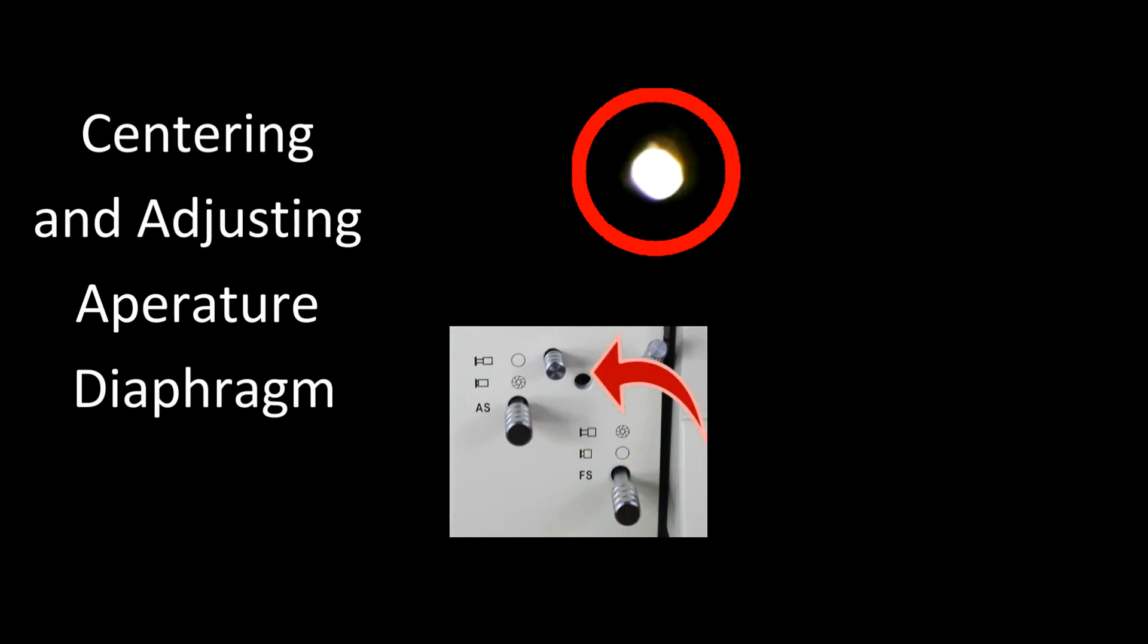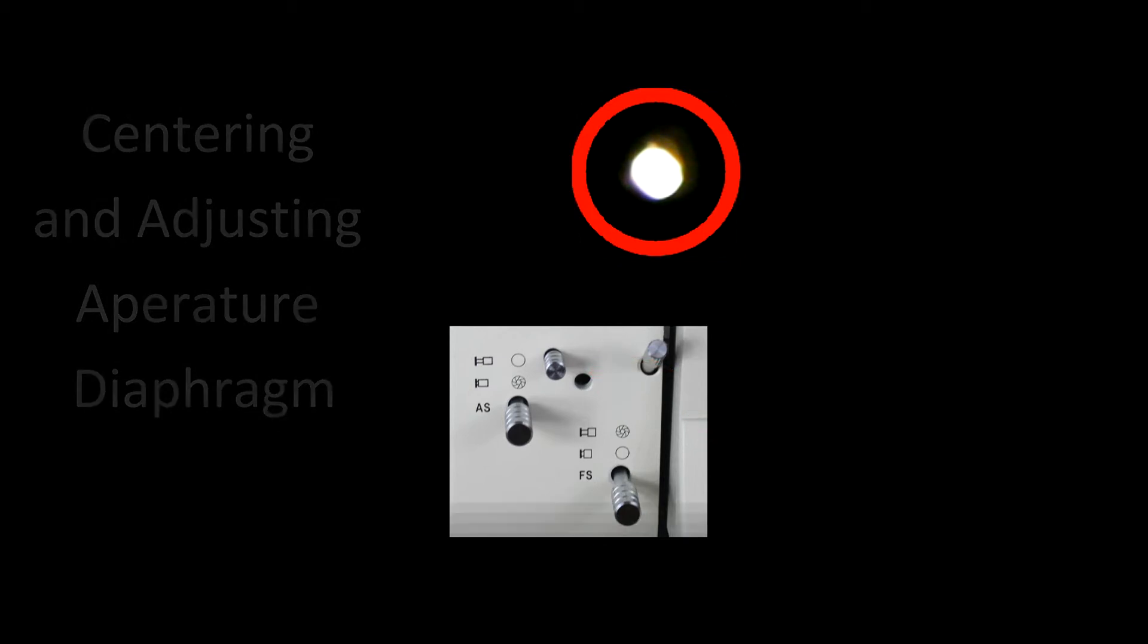And if you need to make an adjustment to align it, there's two set screws on the side of the lamp housing, one on each side. And by adjusting that, we can center the diaphragm.